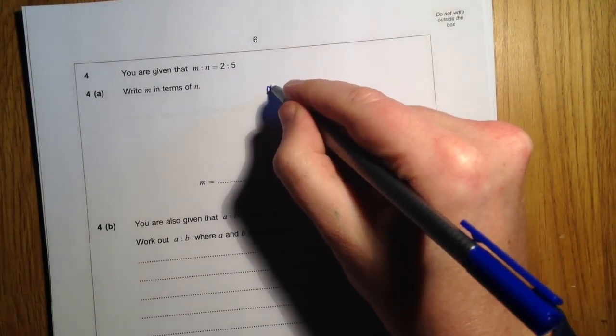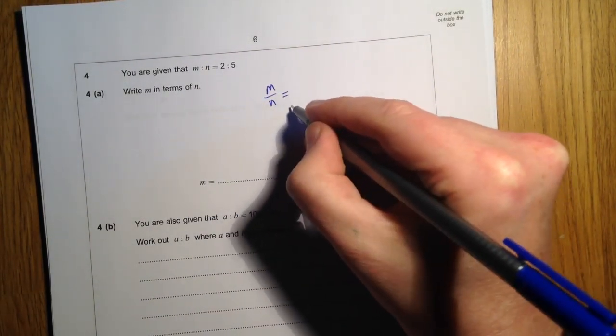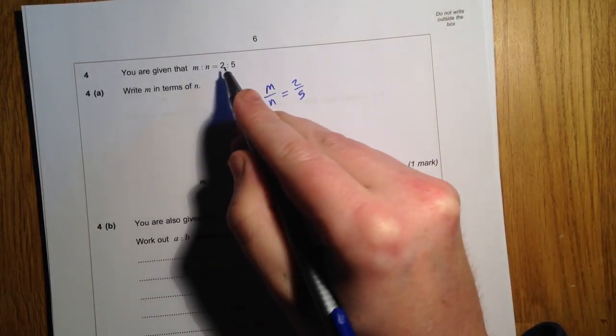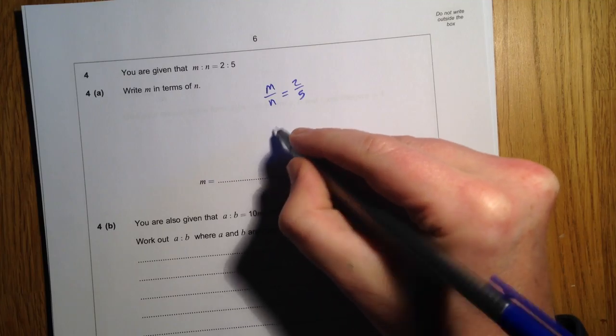So we can write out a ratio like this in another format. We can write m over n is 2 over 5. So m is the smaller amount, n is the bigger amount.